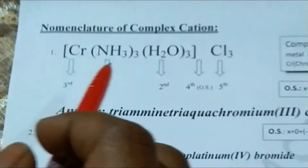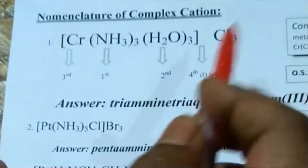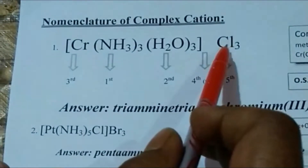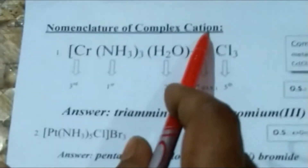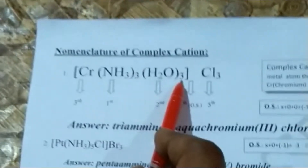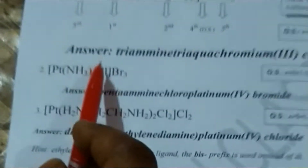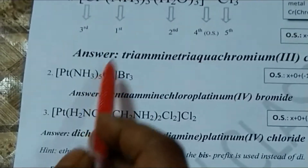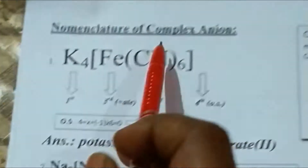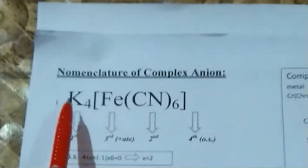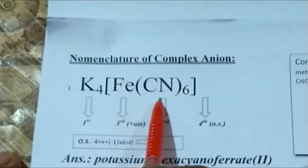In IUPAC nomenclature we have varieties of coordination compounds. Number one: the nomenclature of complex cation. Why is it a cation? Because the minus-3 charge developed by the chlorine atoms is being neutralized, and there is a plus-3 charge on the coordination sphere — that is, on chromium. Similarly, in another example the minus-3 charge is neutralized by the coordination sphere, so there is a positive charge over the sphere — these are known as complex cations. In complex anions, the plus-4 charge is being neutralized, developing a negative charge over the coordination sphere.